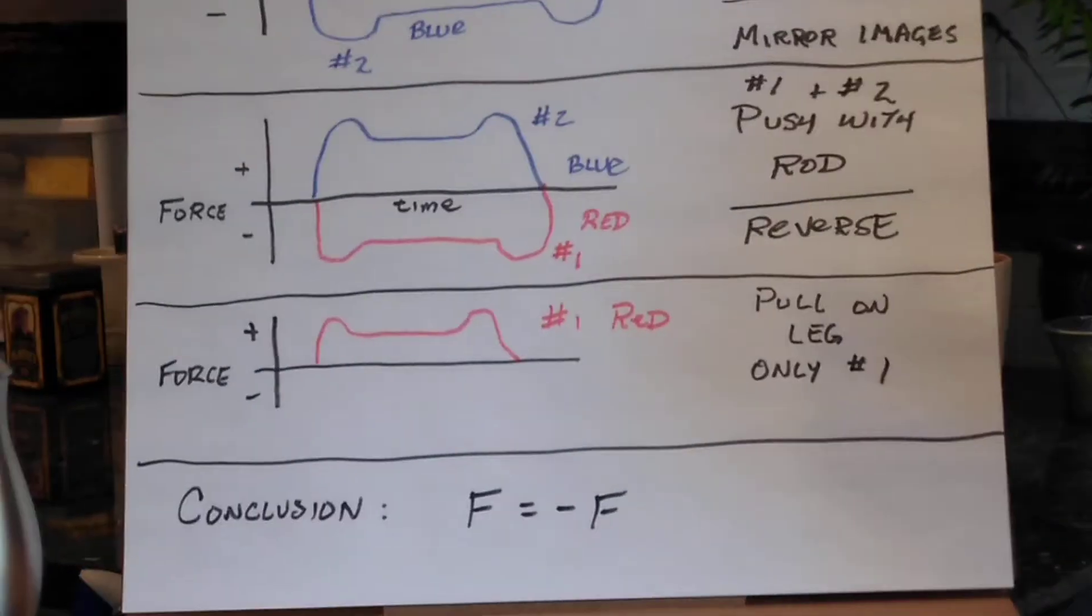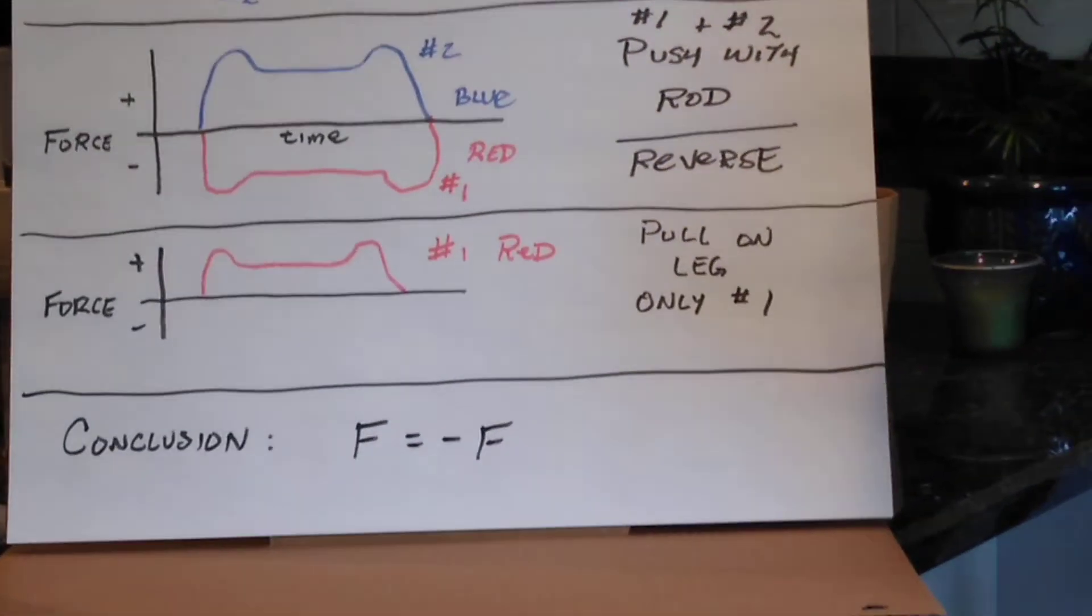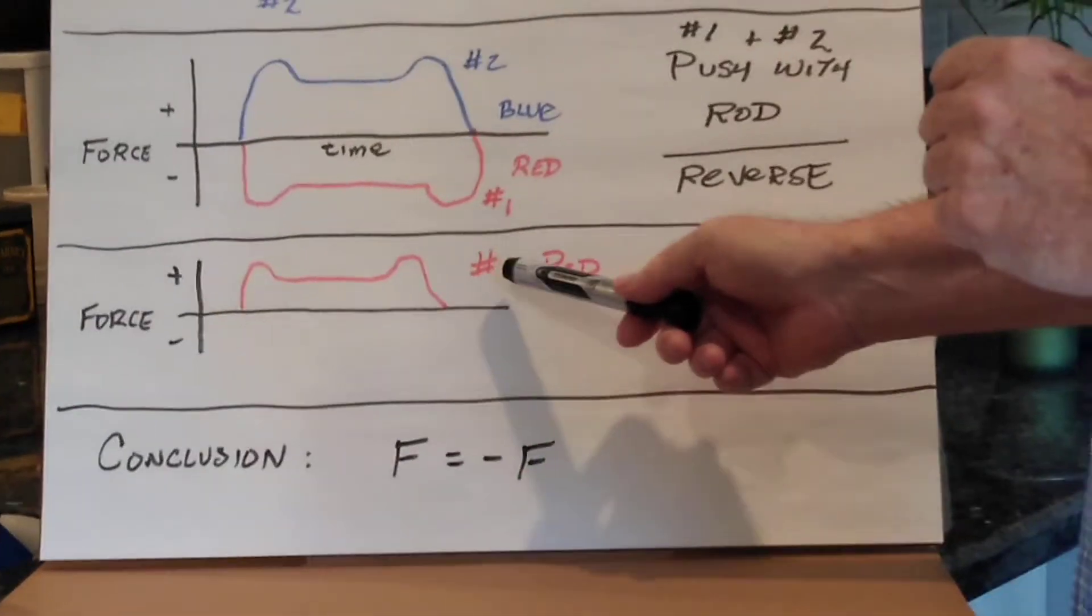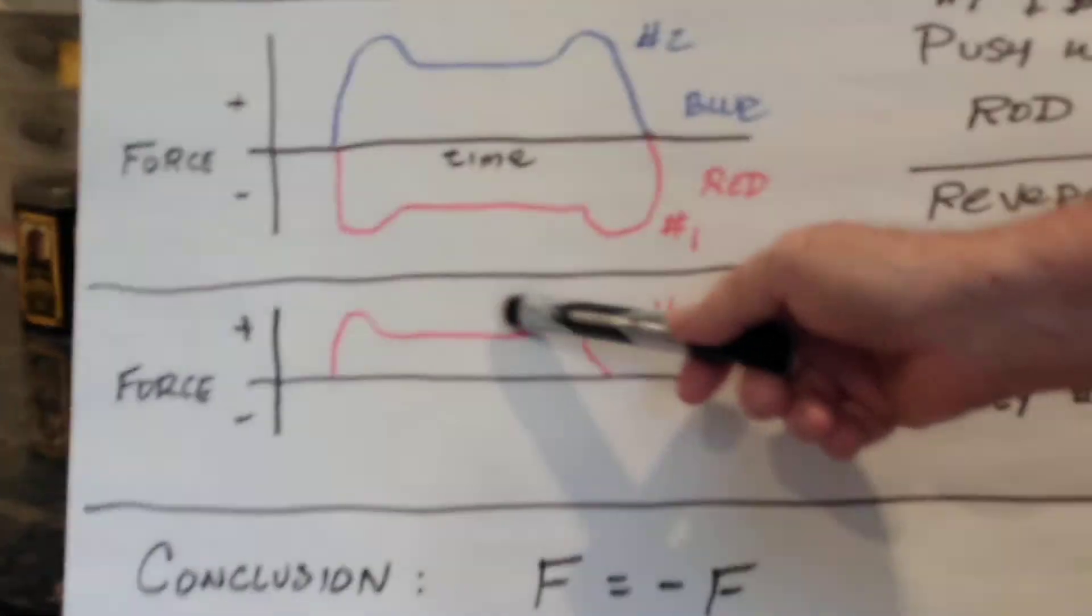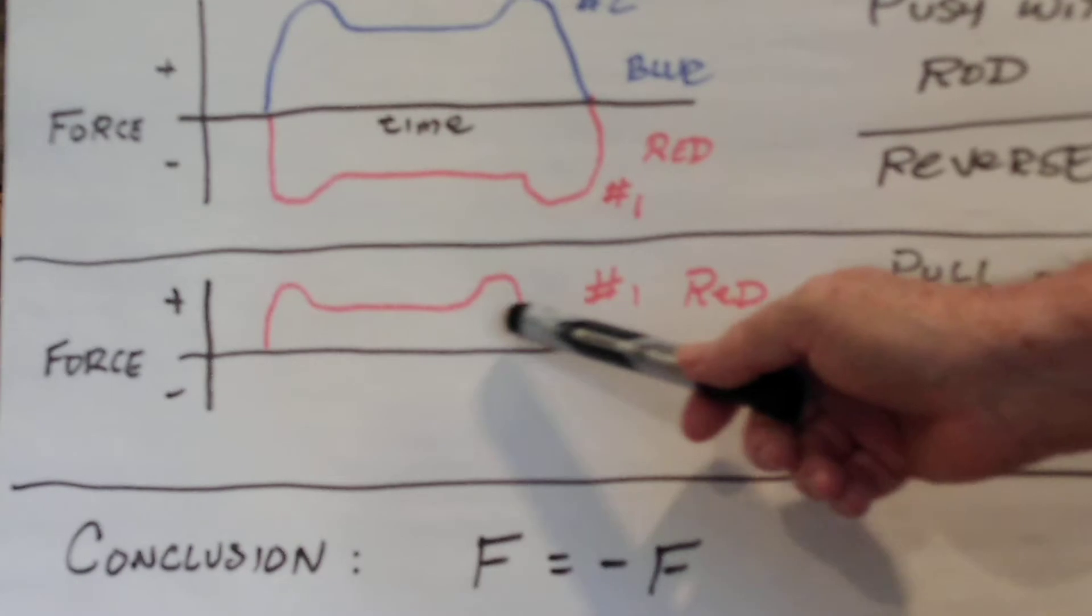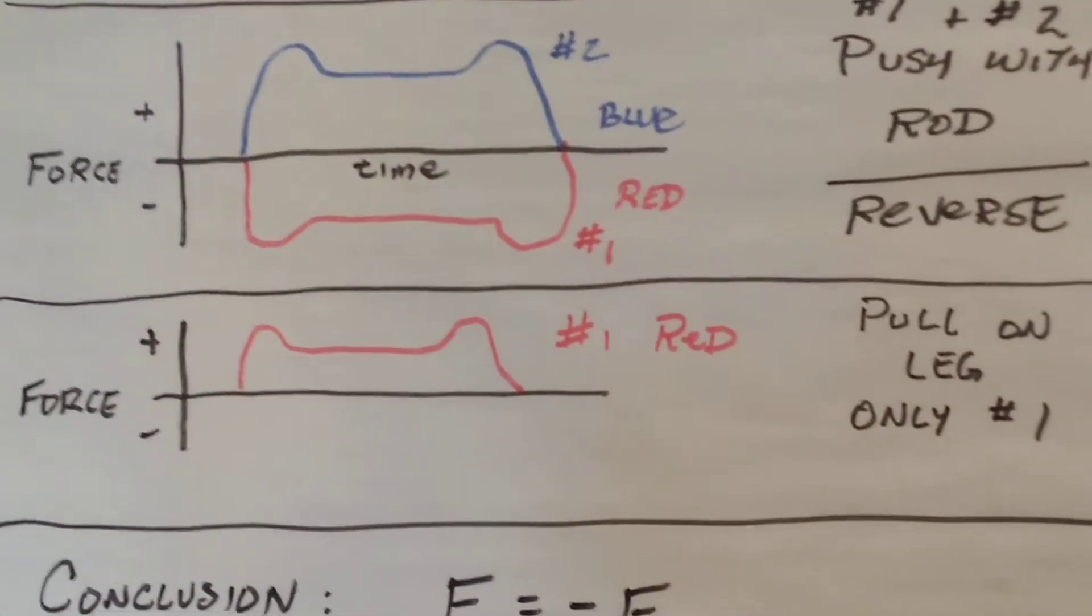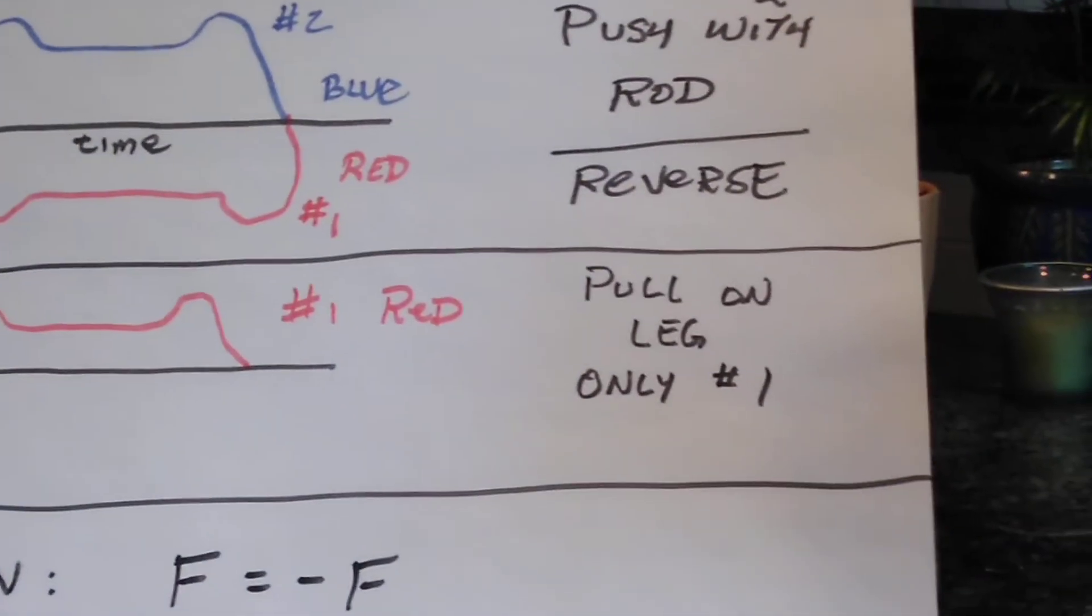Finally, scenario number five. We only pulled on one leg, so we only had one sensor. As you would expect, the graph is only reflecting one sensor, indicating that the pulling motion is felt by the leg, but there's no way to sense what the leg feels since we don't have any sensor on it.